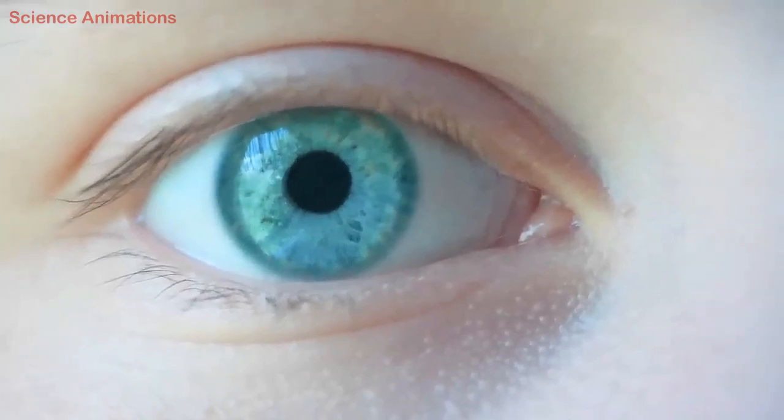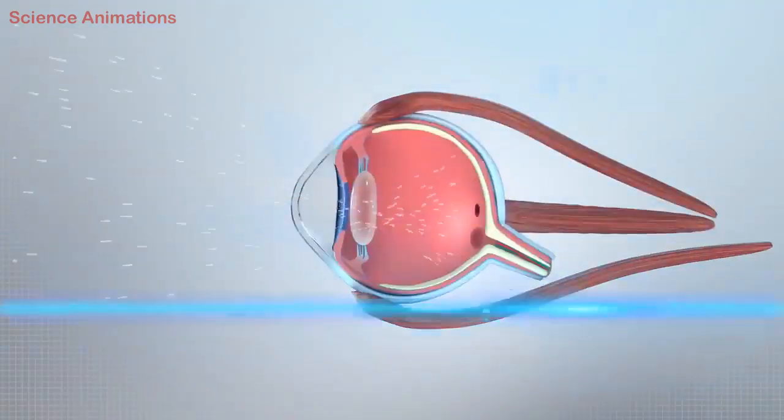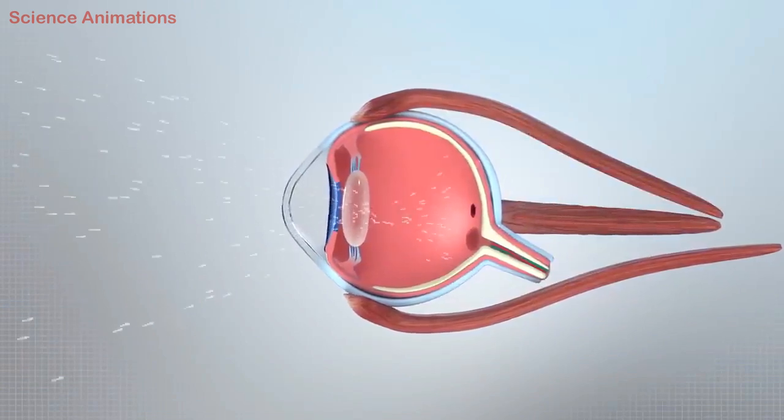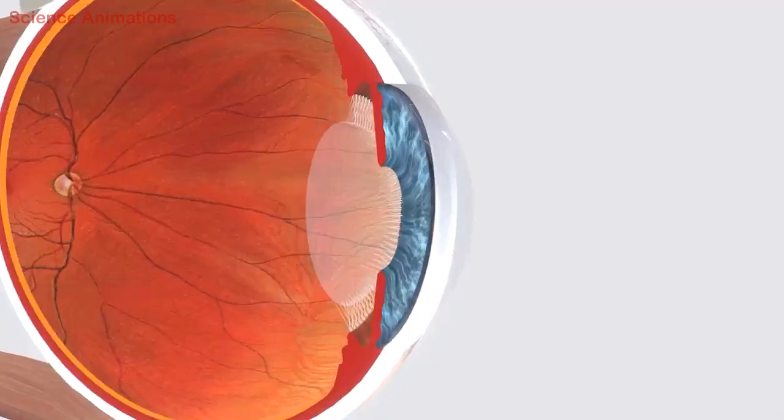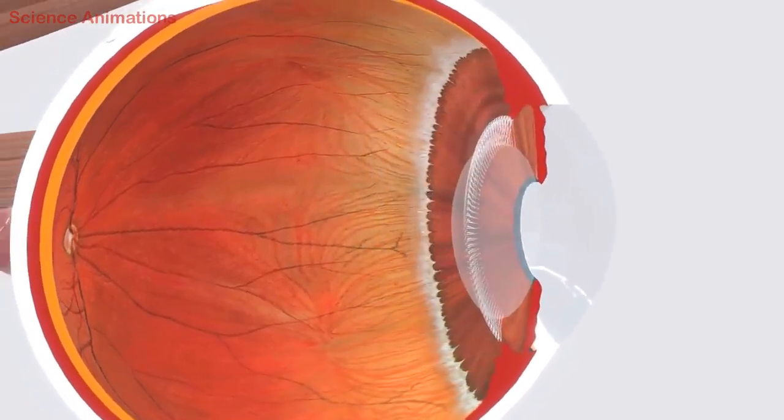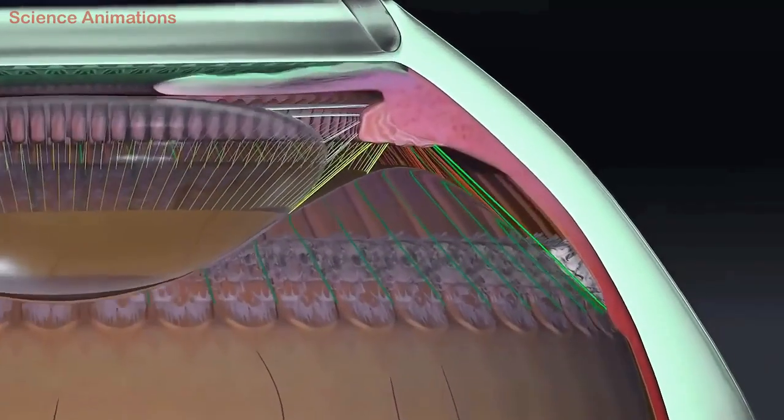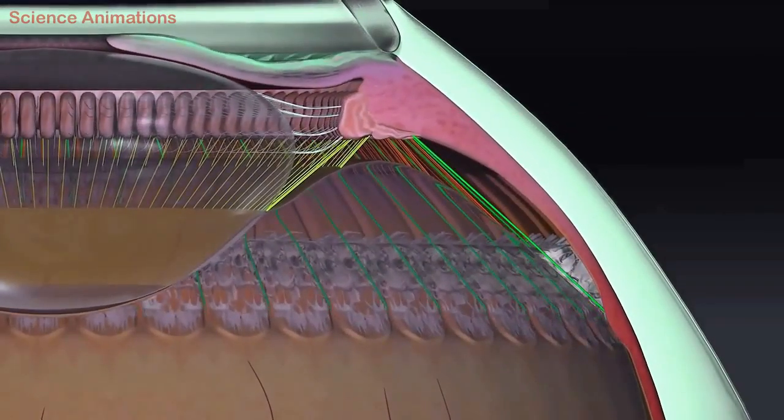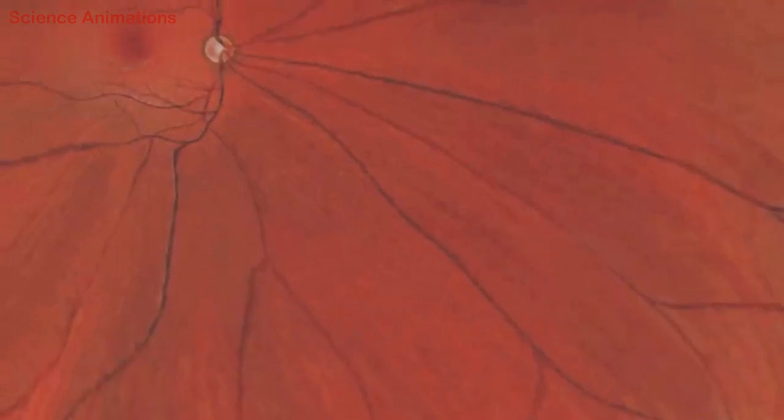At the center of the iris, there is an aperture called the pupil. This is the part of the eye through which light enters. The lens is the structure in the eye that refracts the light rays entering the eye. Its thickness is controlled by the ciliary muscles.